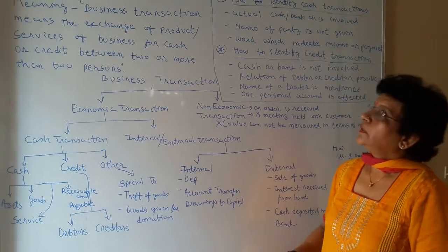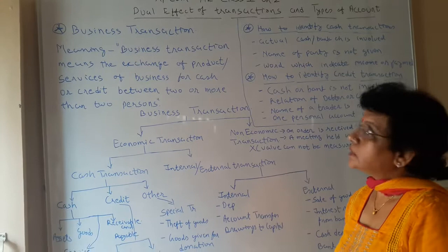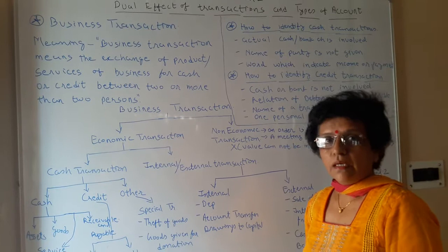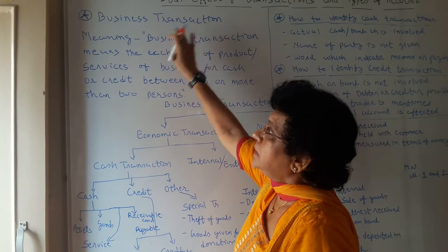Good morning students. Let us do chapter 2 in accounts, that is dual effect of transactions and types of transactions. In our chapter 1, we have already learned the term business transaction. Let us recapitulate and revise what the business transaction means.